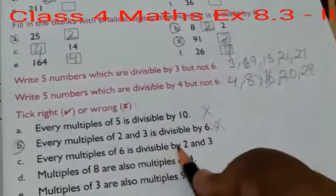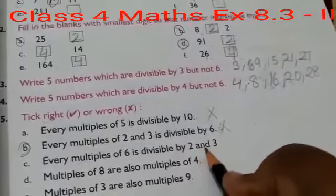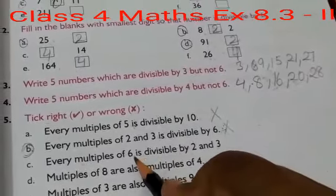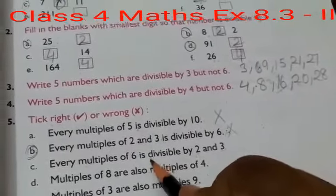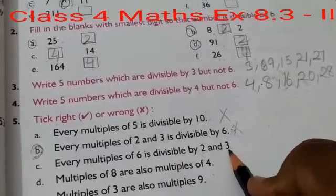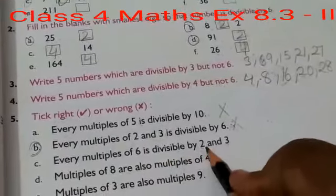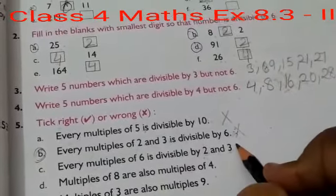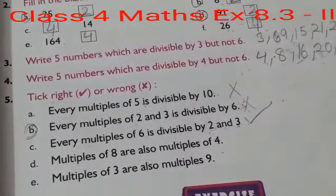Every multiple of 6 is divisible by 2 and 3. Yes, every multiple of 6 is divisible by 2 and 3. Just like: 6 1's are 6, 2 3's are 6, and 3 2's are 6. 6 2's are 12, 2 6's are 12, and 3 4's are 12. 6 3's are 18, 2 9's are 18, and 3 6's are 18. Clear, students? So, every multiple of 6 can be divisible by 2 and 3 also.